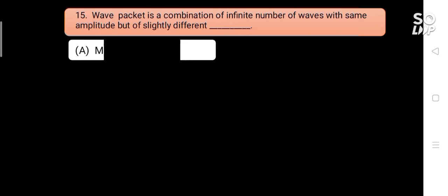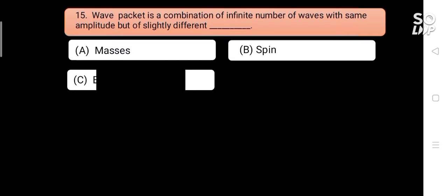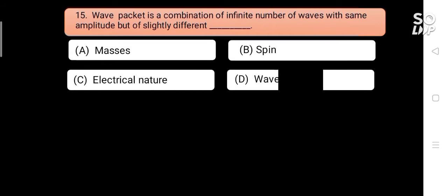A wave packet is a combination of an infinite number of waves with the same amplitude but of slightly different blank. Options are: A) masses, B) spin, C) electrical nature, D) wavelengths. Answer is D) wavelengths.